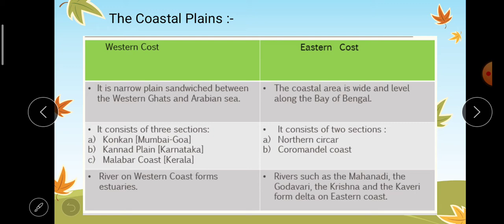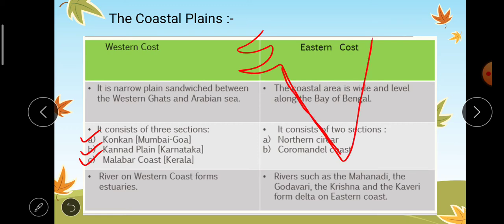The western coast consists of three sections. From Mumbai to Goa it is known as the Konkan coast. In Karnataka, the plain is known as the Kannad Plain — this name is derived from the language spoken in Karnataka, which is Kannada. In the south, in Kerala, the coast is known as the Malabar coast.